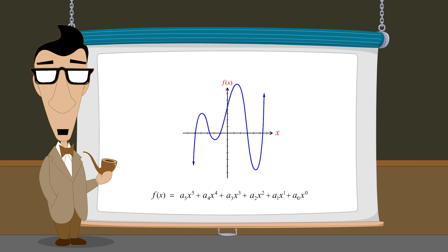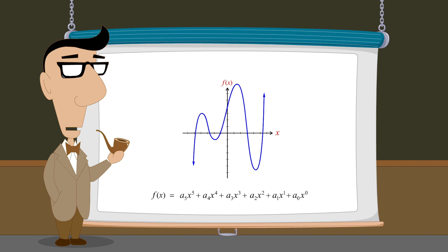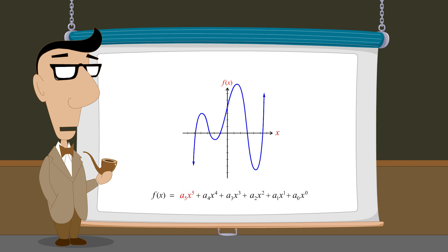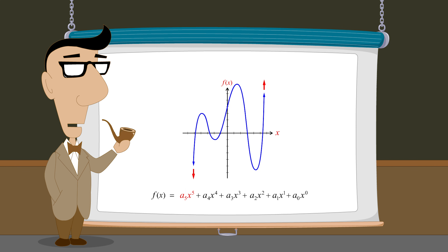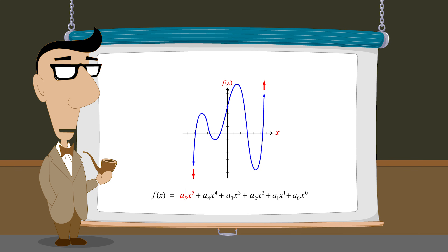As we embark upon building polynomials, we will see that the leading term determines whether the function's graph will ultimately grow in the positive or negative direction as x takes on very large positive or negative values. This is referred to as the end-behavior of the graph.